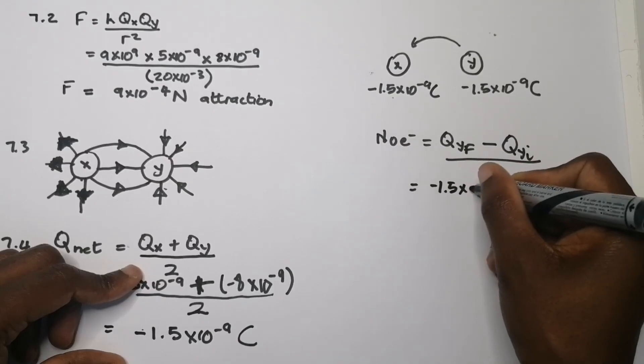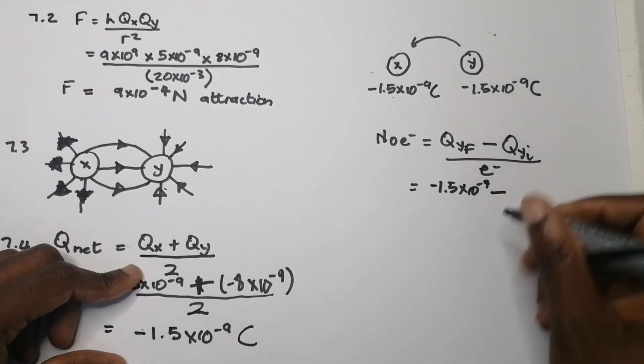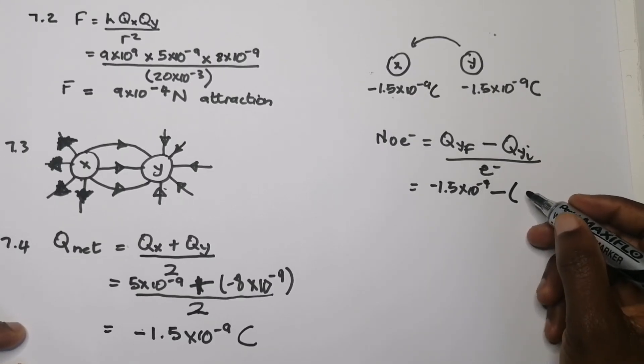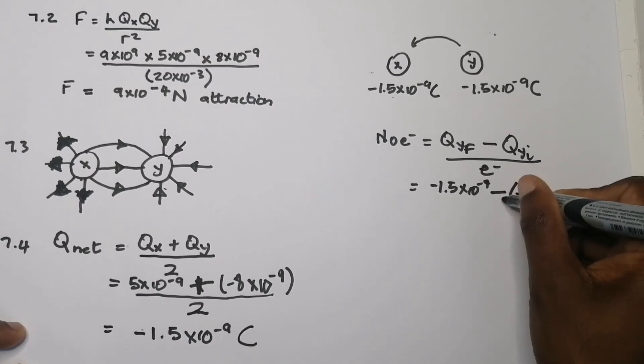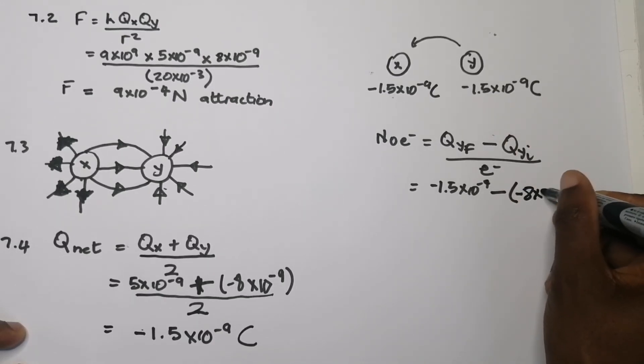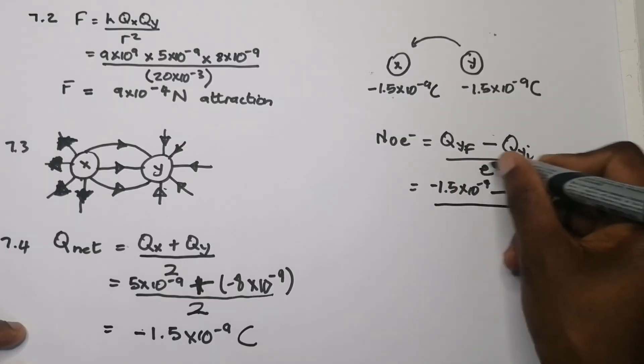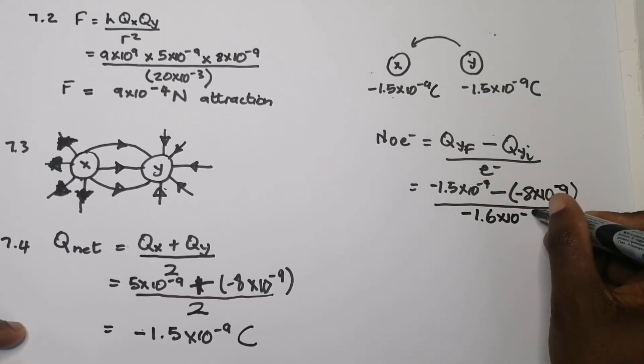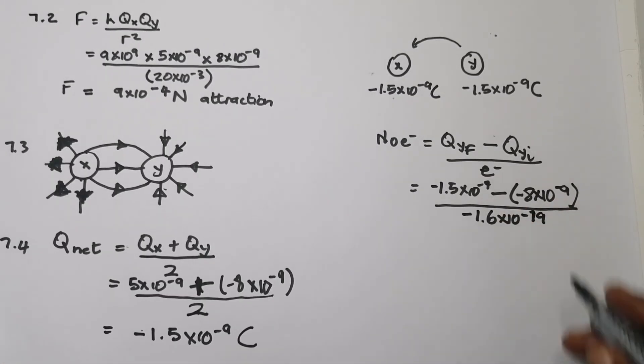So what was the charge of Y after they touched? It was minus 1.5 times 10 minus 9. Minus the charge of Y before they touched. This was minus 8 times 10 to the power minus 9. And you would divide that by the unit charge of an electron, 1.6 times 10 power minus 19. And you would get the number of electrons. I'm not going to bother much with that. I just wanted to show you. Just in case they asked you to calculate the number of electrons that were transferred. This would be quite relevant for grade 11s as well.